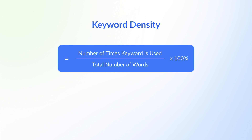So let's take a look at how to calculate keyword density. To figure out the keyword density in a piece of content, divide the number of times a keyword appears in the text by the number of words in the article. For example, 10 divided by 1000 equals 0.001. Then multiply by 100 to get a percentage.